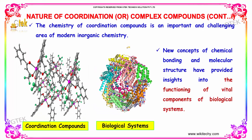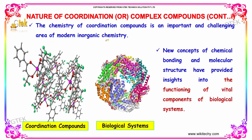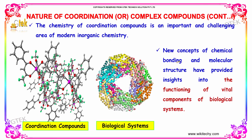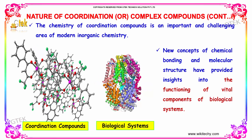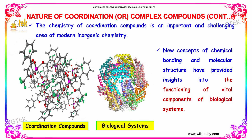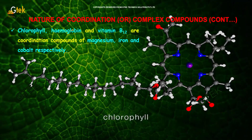The chemistry of coordination compounds is an important and challenging area of modern inorganic chemistry. New concepts of chemical bonding and molecular structure have provided insights into the functioning of vital components of biological systems. For example, chlorophyll, hemoglobin, and vitamin B12 are coordination compounds of magnesium, iron, and cobalt, respectively.